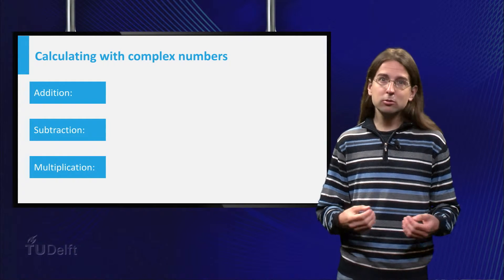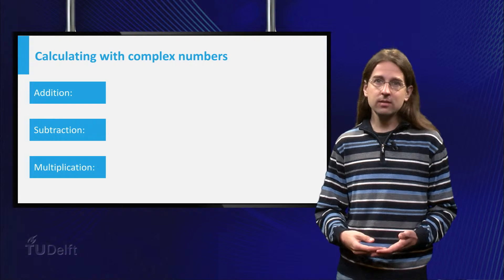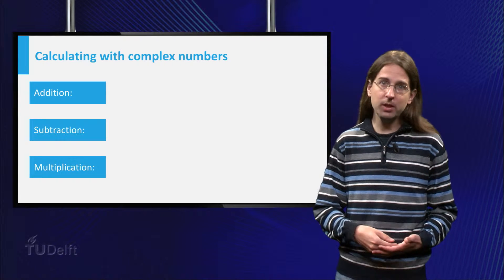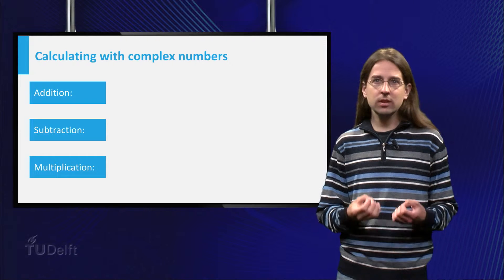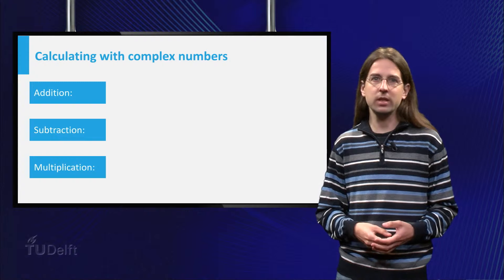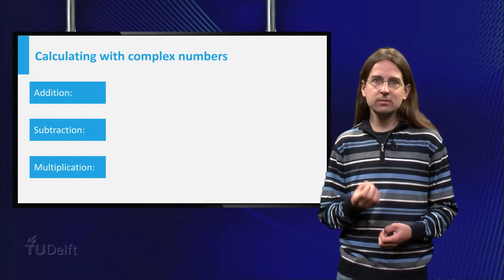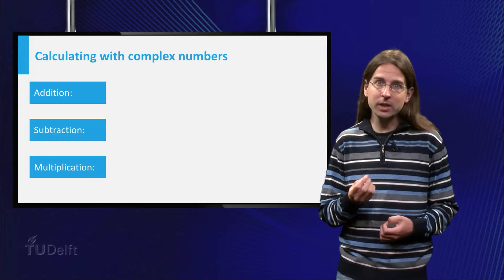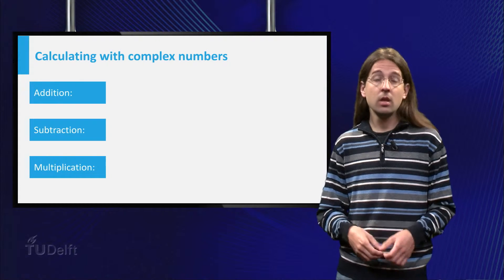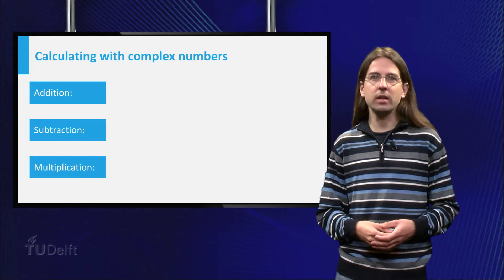We can now compute with complex numbers just as with real numbers. You can add, you can subtract, you can multiply, and the answer can always be written in the form x plus i times y. The general idea is to just make the calculation assuming i is just any other number, and whenever you encounter i squared, you replace it by minus 1.